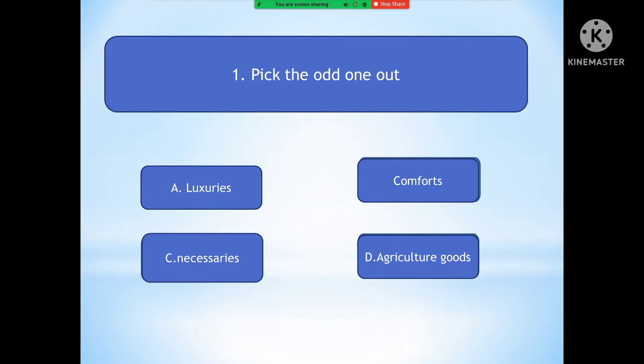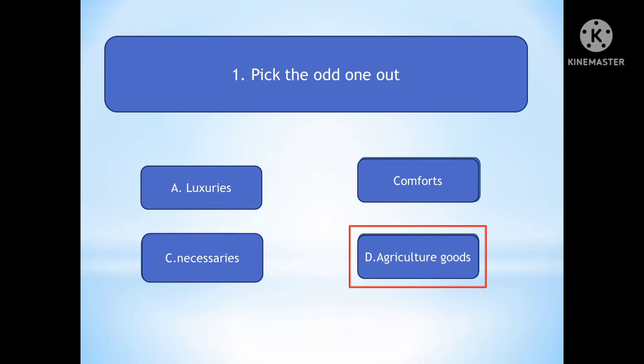First question: pick the odd one out. Option A is Luxuries. Option B is Comforts. Option C is Necessaries. Option D is Agricultural Goods. The right answer is Agricultural Goods. Luxuries, Comforts, and Necessaries are the three types of goods in microeconomics, but Agricultural Goods is a different category.